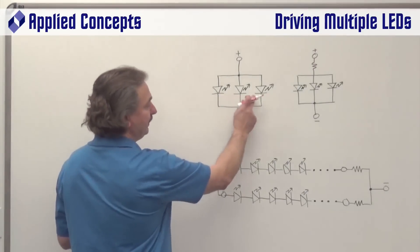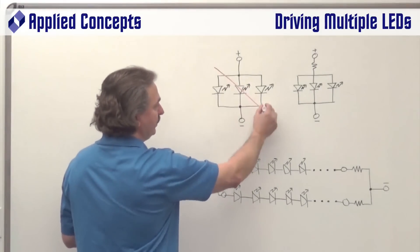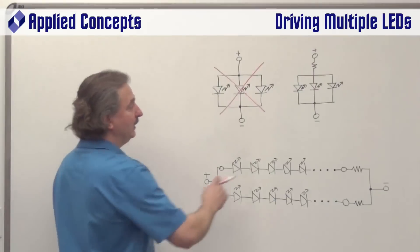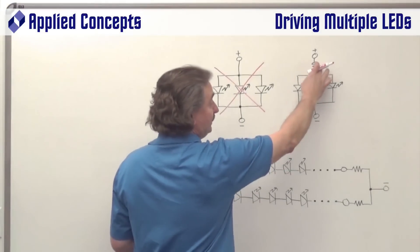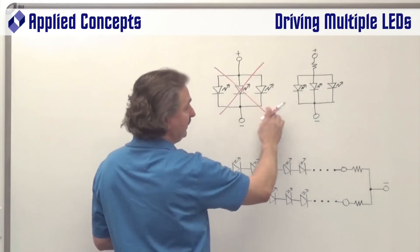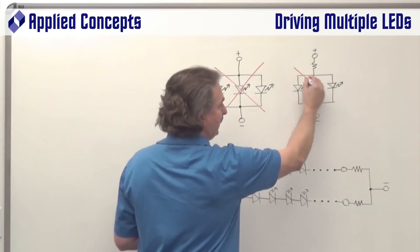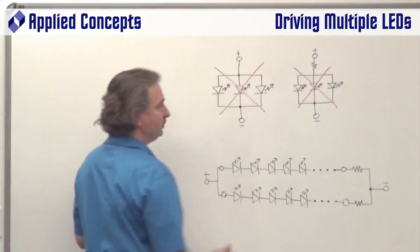One of course is just simply placing them in parallel, not good because there's no guarantee that they will share current. Another one might be to put a resistor to limit the current, but here again, the three LEDs are still in parallel. They are not guaranteed to share current.